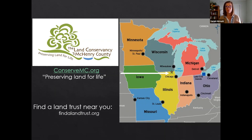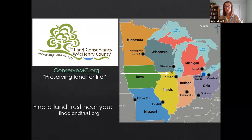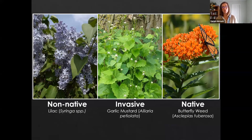We support landowners in achieving their environmental goals through education programs like this one, conservation easements, and a native plant, tree, and shrub sale every spring and fall. More info can be found by following us on social media or our website. Find your local land trust at findlandtrust.org.